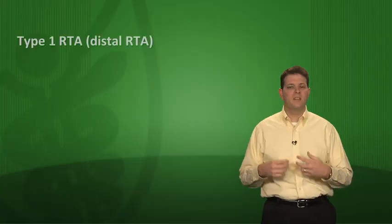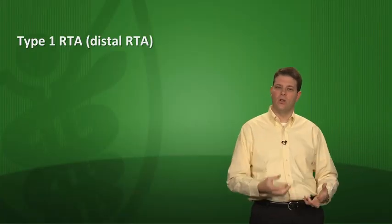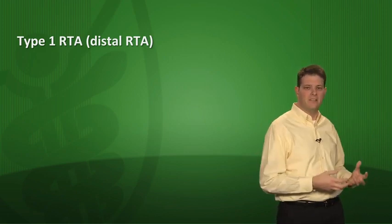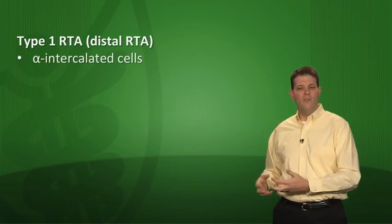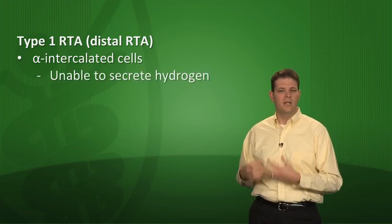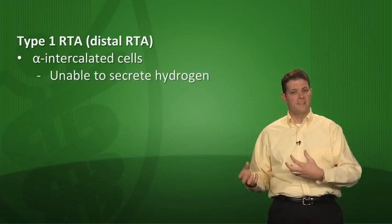Now let's talk about renal tubular acidosis. There are three types, and all three result in a non-anion gap metabolic acidosis. Type 1 RTA, or distal RTA, is a defect in the distal nephron — specifically the collecting tubule. In the collecting tubule you have alpha intercalated cells which secrete hydrogen, and beta cells which secrete bicarb. In type 1 RTA, the alpha intercalated cells can't secrete hydrogen, so hydrogen stays in the body and the patient becomes acidotic.